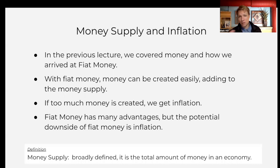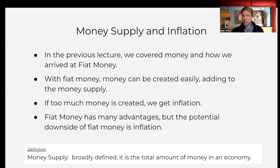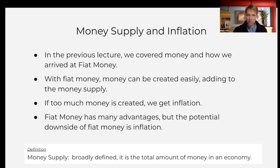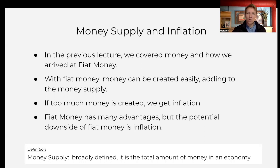The big downside of fiat money is the potential for inflation or high inflation — that's the danger. That's what this unit plan is broadly about: inflation and where it comes from is expanding the money supply, which because of fiat money, the central bank now has the power to do.